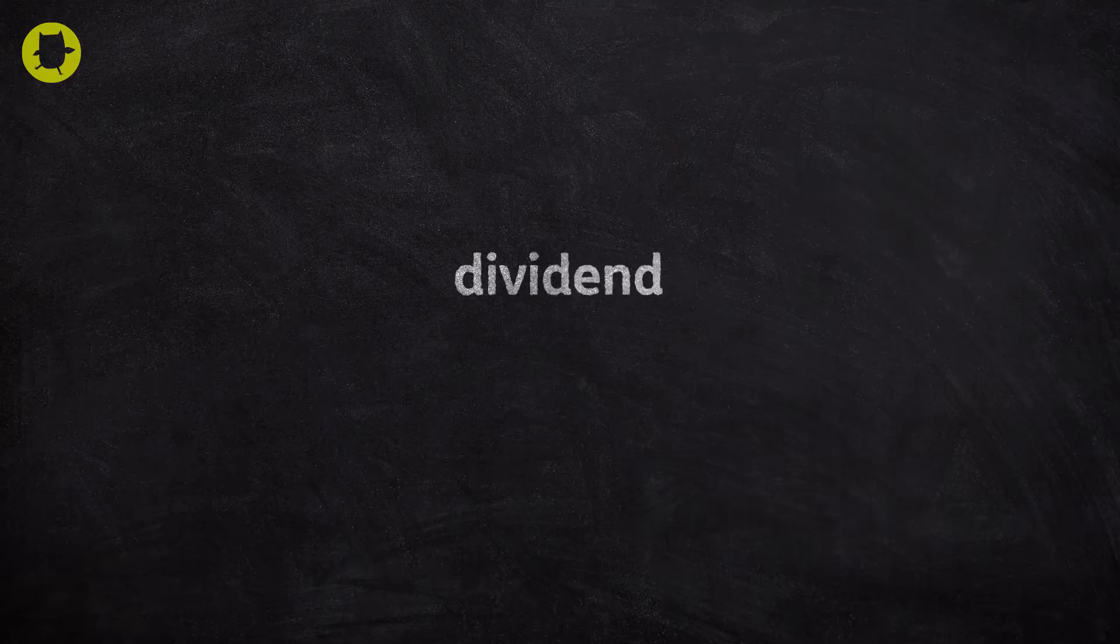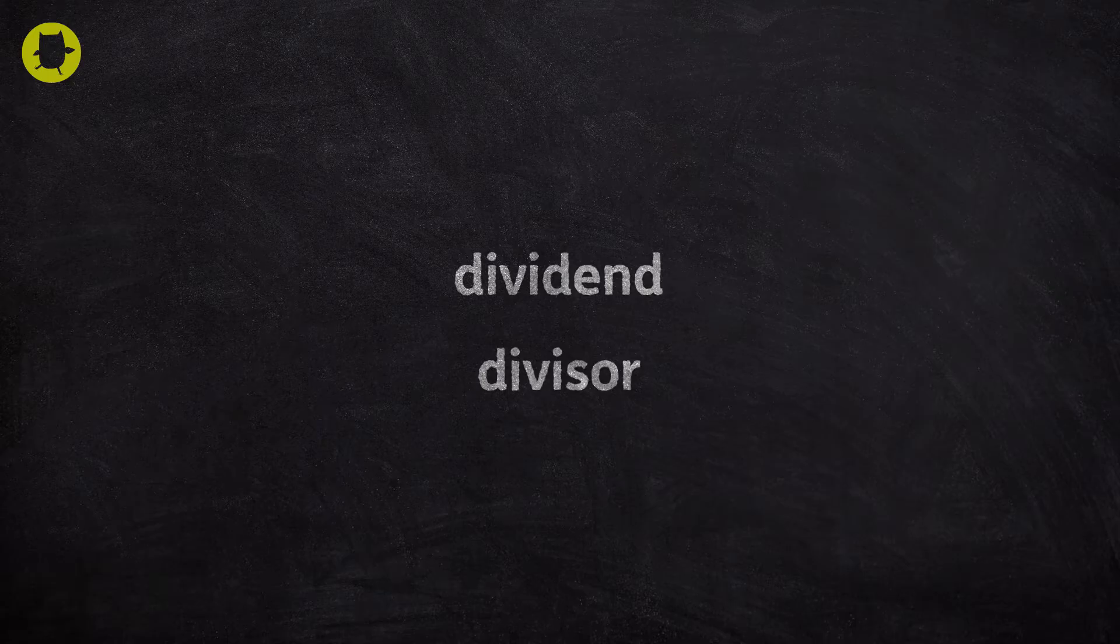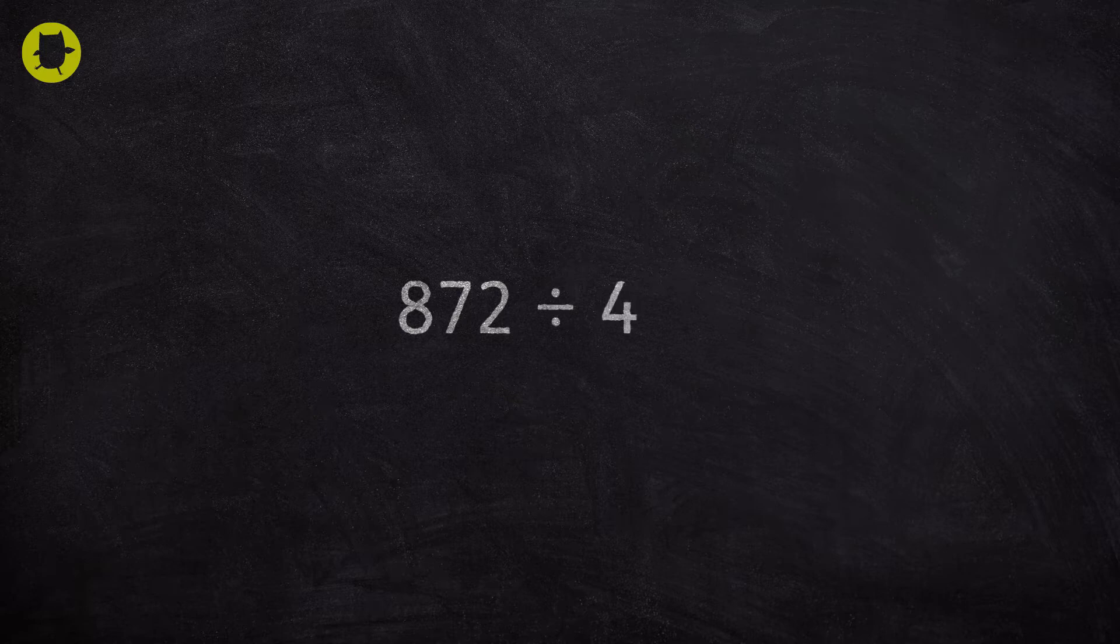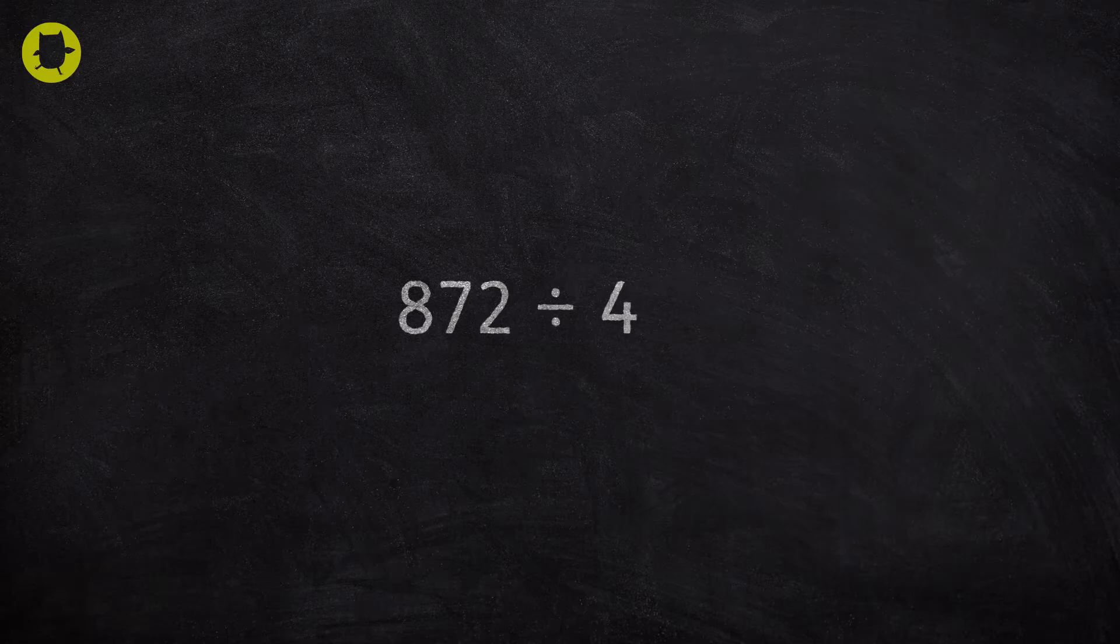The divisor is the number that will divide into the dividend. Let's take 872 divided by 4. In this example, the dividend is 872 because it is the number divided by the divisor, which is 4.